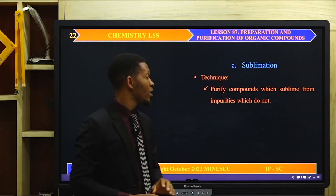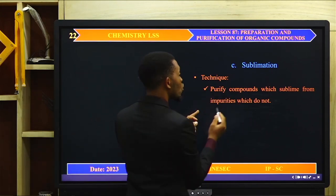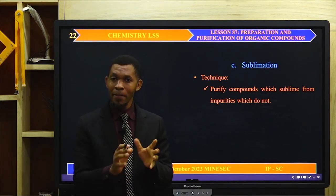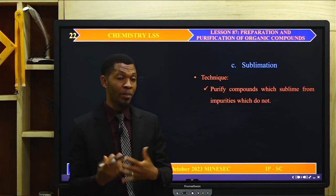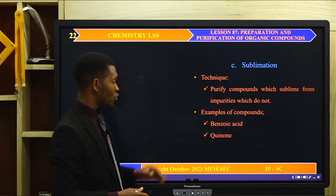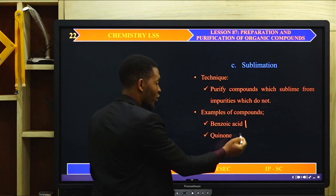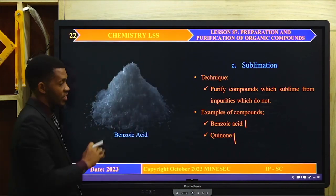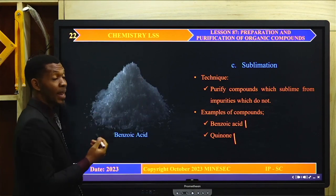Now let's go to sublimation. Sublimation is a technique used to purify compounds which sublime from impurities which do not sublime. If an organic compound can sublime and the impurities in it cannot sublime, we can use sublimation to purify the compound. An example of a compound that sublimes is benzoic acid — you have a picture of benzoic acid on your screen, showing crystals of benzoic acid.